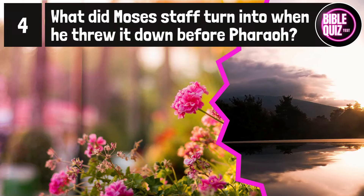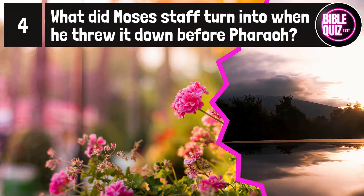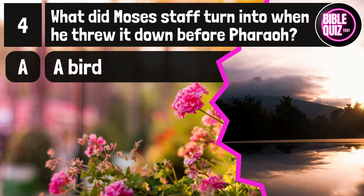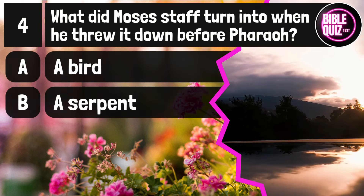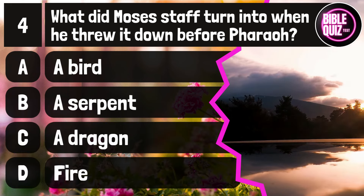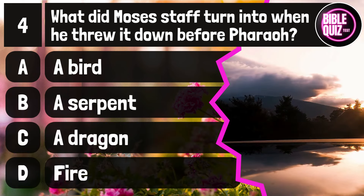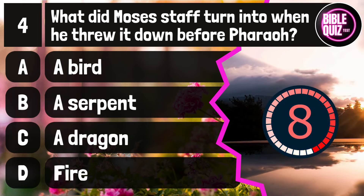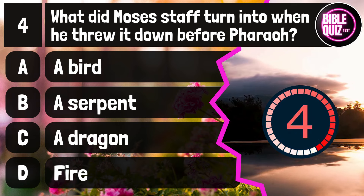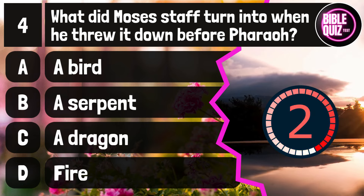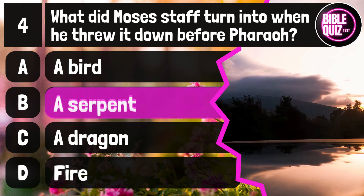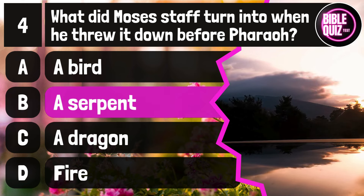Question number 4. What did Moses' staff turn into when he threw it down before Pharaoh? Option A: A bird. Option B: A serpent. Option C: A dragon. Option D: Fire. Time to think. The answer is option B: A serpent.